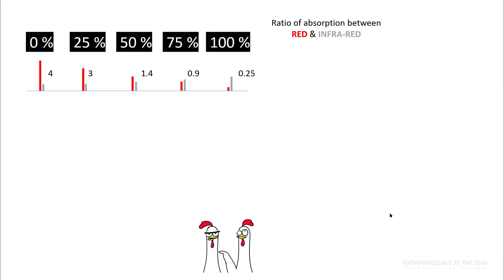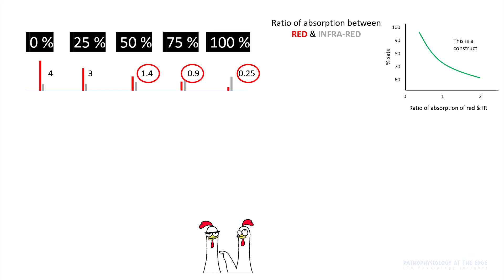The way a pulse oximeter works is by looking at the ratio of absorption between red and infrared rays, and it plots that onto a preformed curve. For example, if your ratio of absorption of red to infrared is around 0.8, it will plot it on that curve and give you SaO2 of 80%.